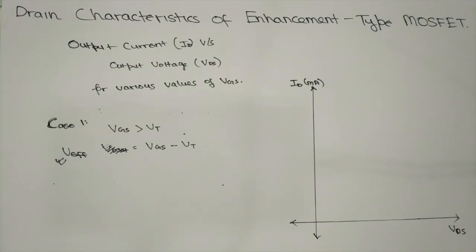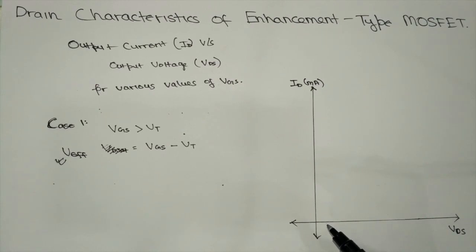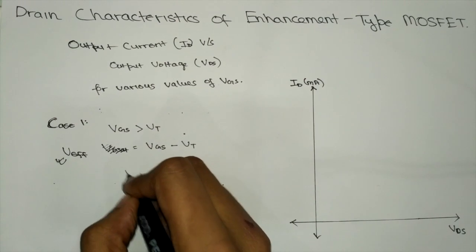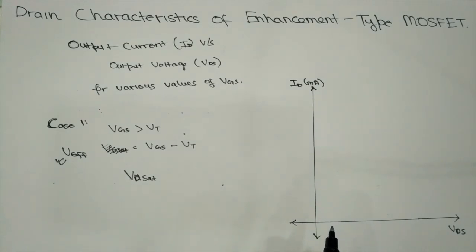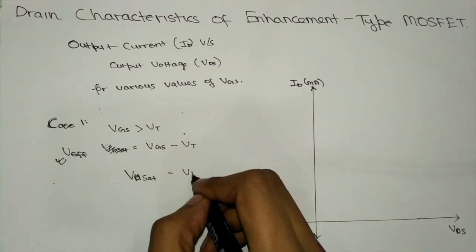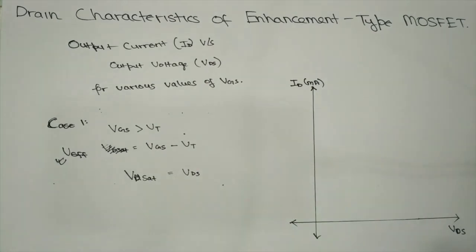For a given VGS value, ID remains constant once saturation is reached. On increasing the VDS value, the drain current increases in a linear way until VDSAT is reached. VDSAT is the saturation voltage for that particular value of VGS. When VDS equals VDSAT, the device enters into the saturation region.